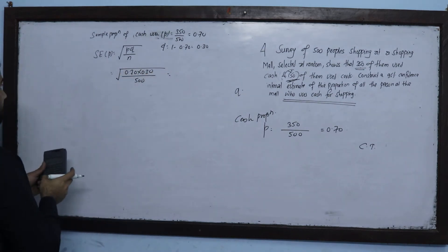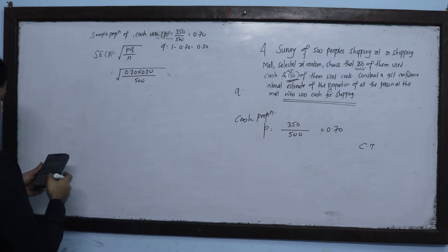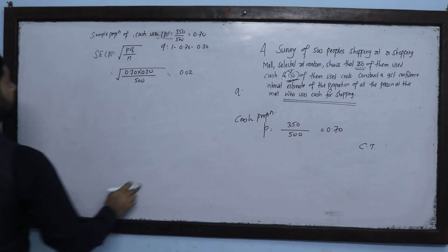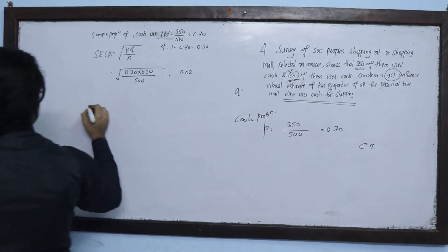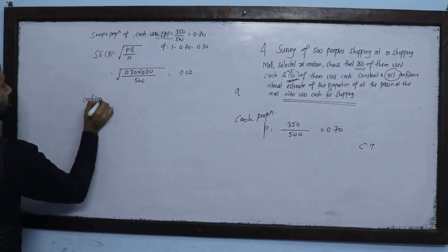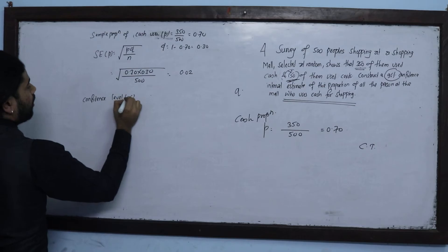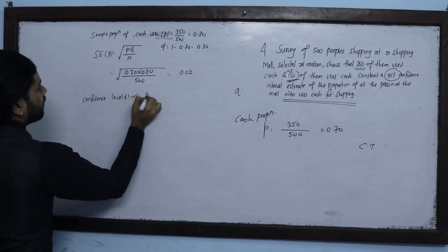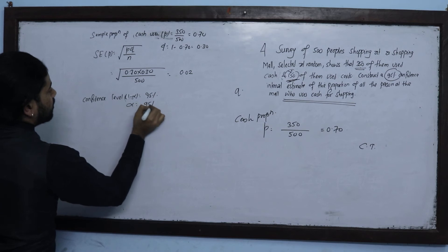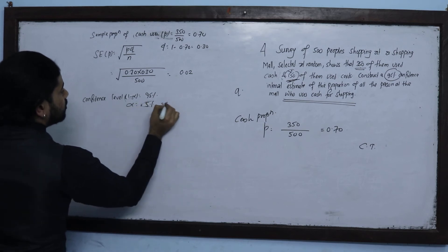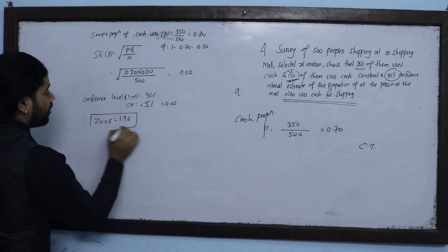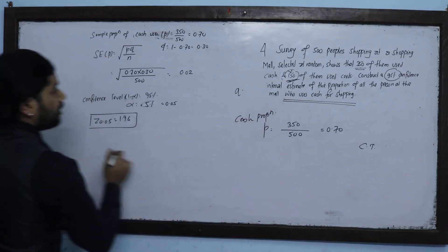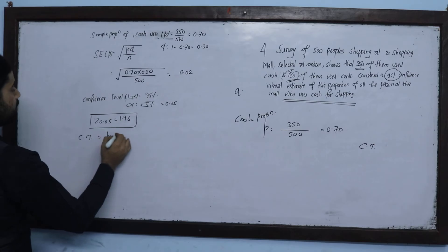The square root of 0.7 times 0.3 divided by 500 gives approximately 0.02. For a 95% confidence level, the level of significance is 1 minus 0.95 = 0.05, and the corresponding z-value from the standard table is 1.96.